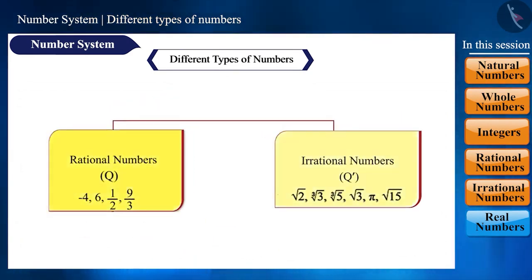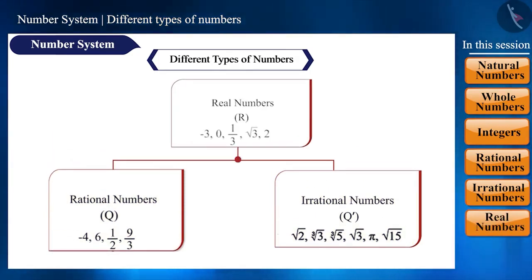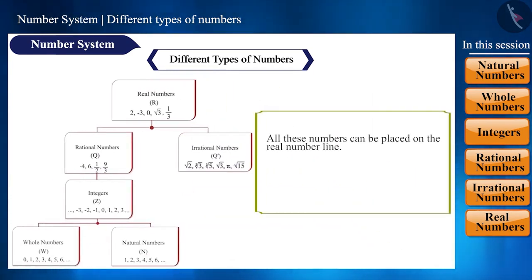The rational and irrational numbers combine to form real numbers, which are represented by the symbol R. That is, under real numbers, there are only two types of numbers, rational and irrational. Since all these numbers can be represented on the number line, we call them real numbers, and that number line is called the real number line.